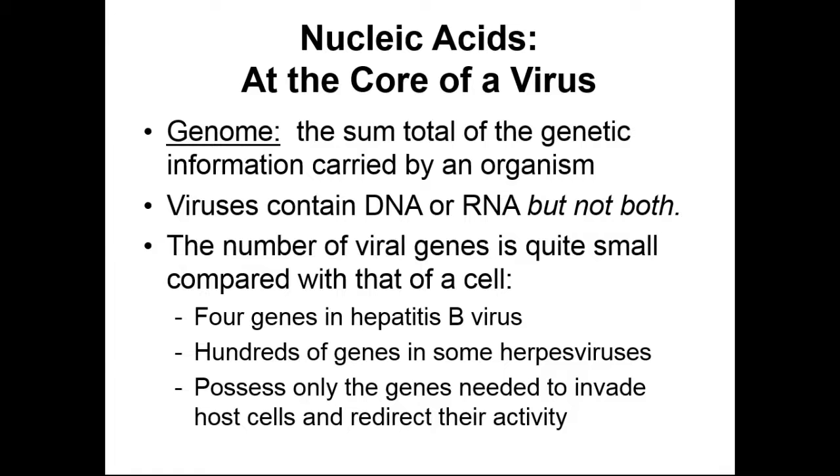If we look at viral genes, generally speaking, there's not going to be many of them. We as humans have tens of thousands of genes in our genome. Our viral genomes are going to be much smaller. We have only four genes in our hep B virus, up to hundreds of genes in the herpes viruses. We're looking at up to three digits of genes in viruses, whereas we as humans can have five digits. Viruses don't need as many genes because they don't have as many structures they need to program or have instructions for. They only need genes to encode for proteins that get them into the host cell and allow them to take over the host cell.